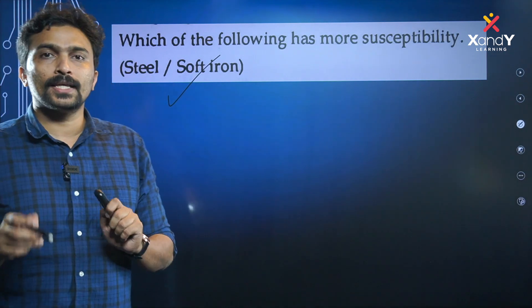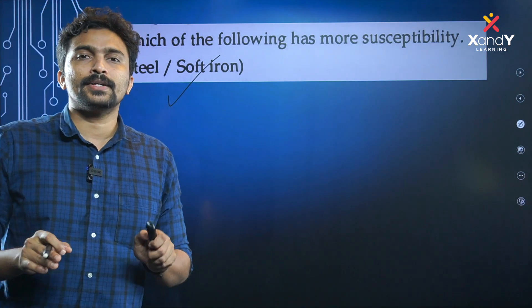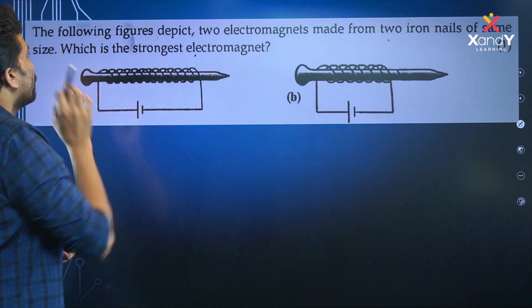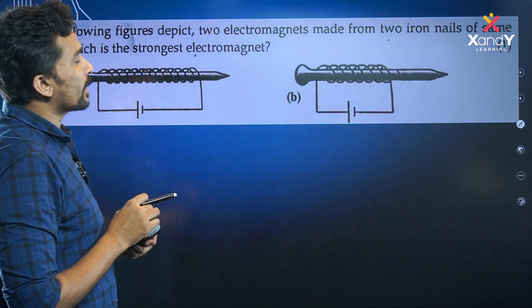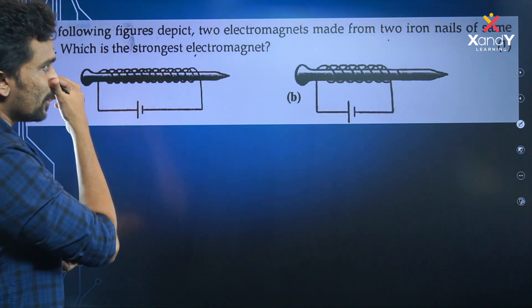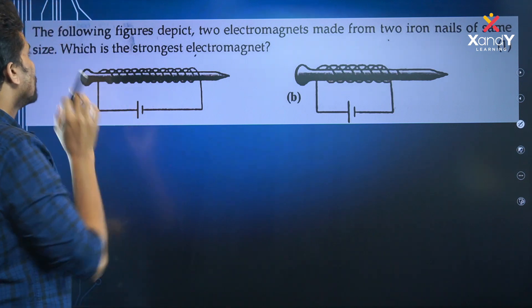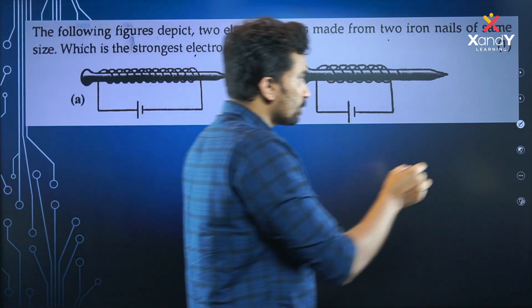You can use the magnet like a permanent magnet. The following figures depict two electromagnets made from two iron nails of the same size. Which is the strongest electromagnet?